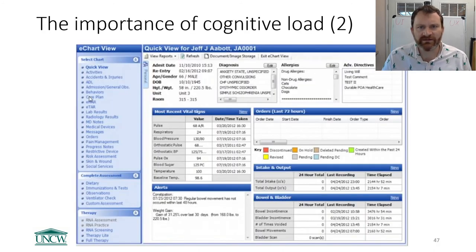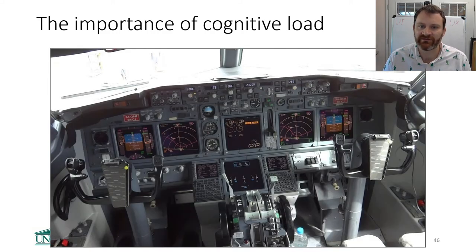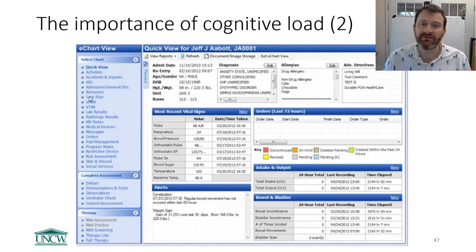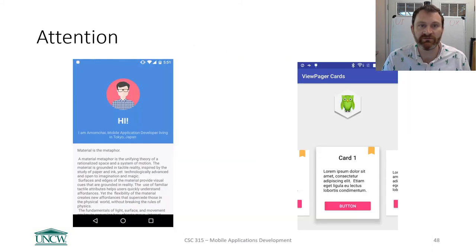Cognitive load can be a big deal. We're talking about errors and inefficiencies that are safety critical. Your app is probably never going to be safety critical, but nonetheless, if people are inefficient or make mistakes when using it, that impacts usability. Bad usability impacts user experience, and people are going to stop using your app.